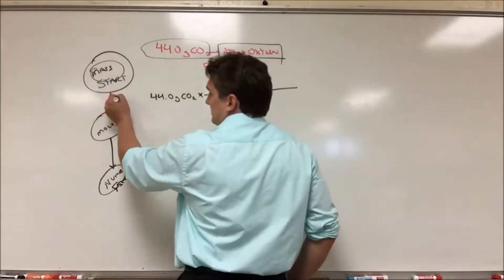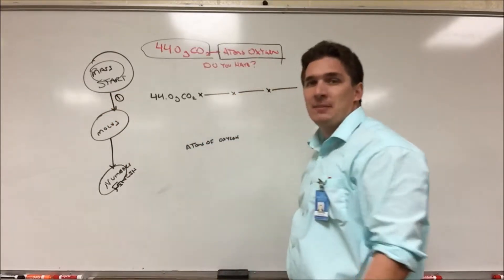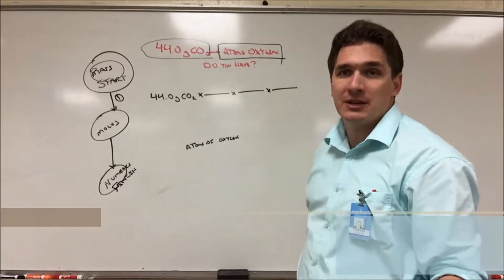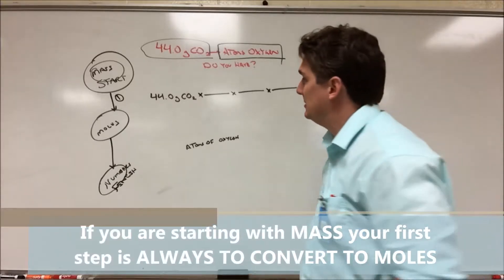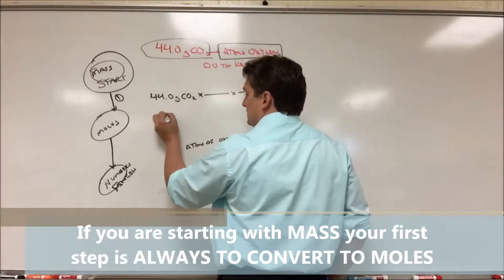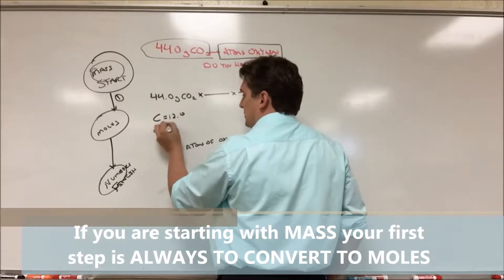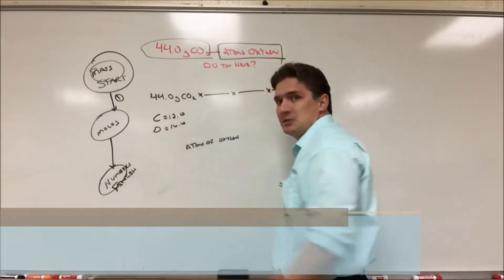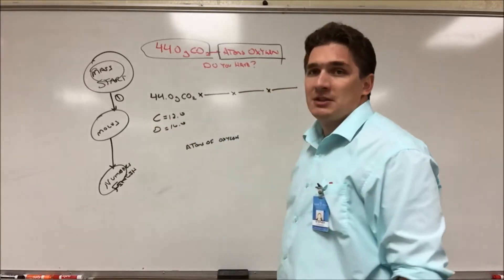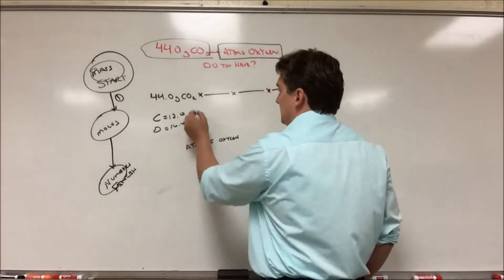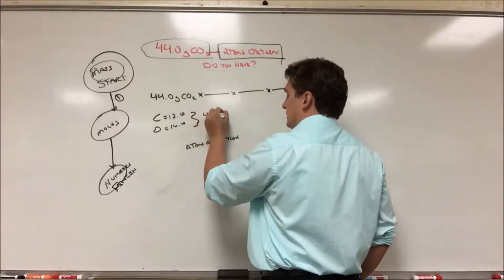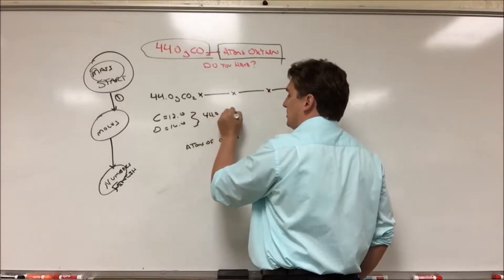So the first conversion factor here is going to be our mass to moles. This is what we always have to do, if we're given a mass, we have to convert to moles. So carbon weighs 12, oxygen weighs 16, so when we add up the weights, as we did in the previous video, we get that our atomic weight is 44.0 grams per mole.